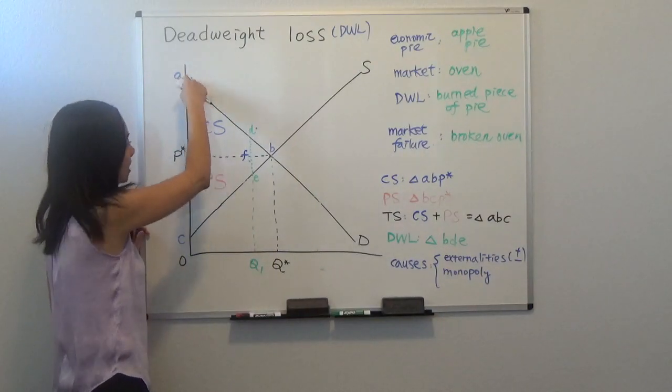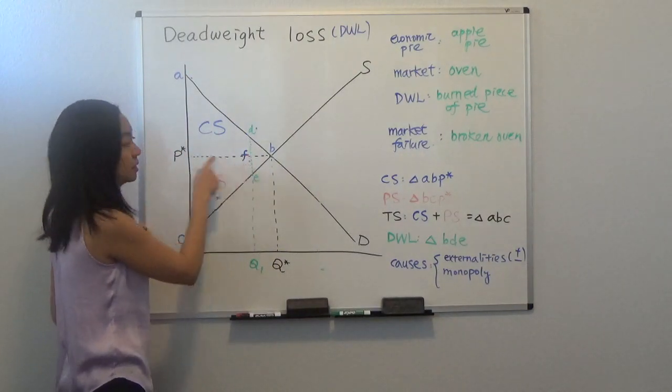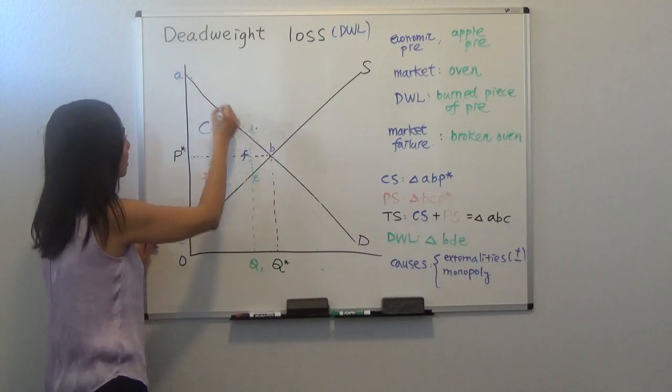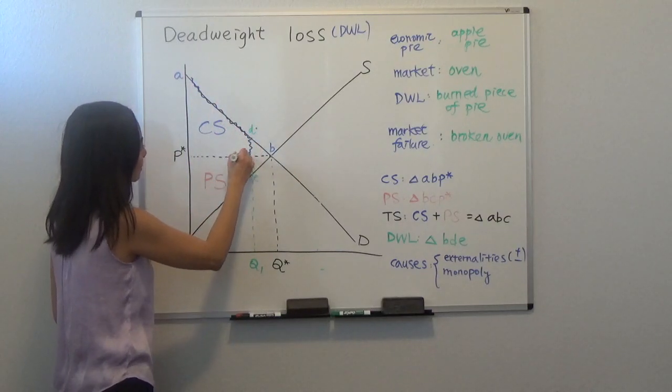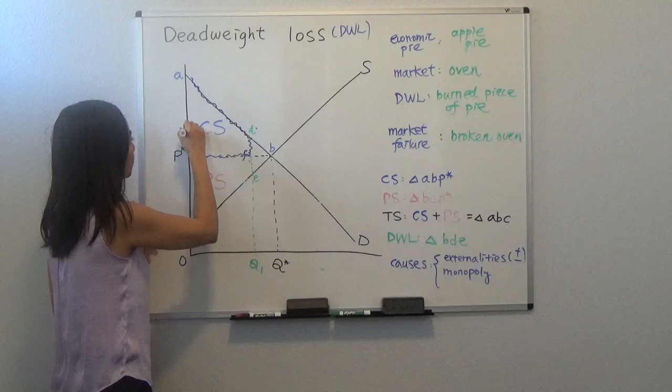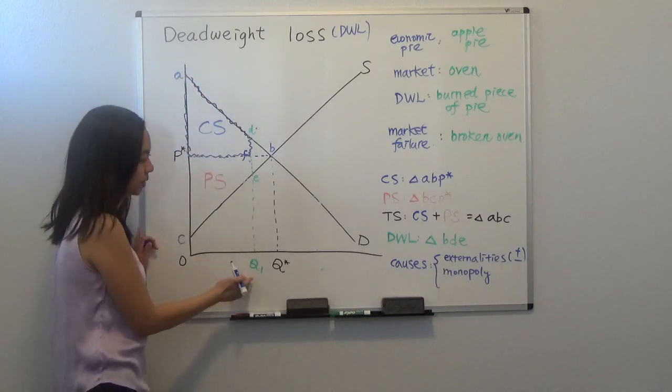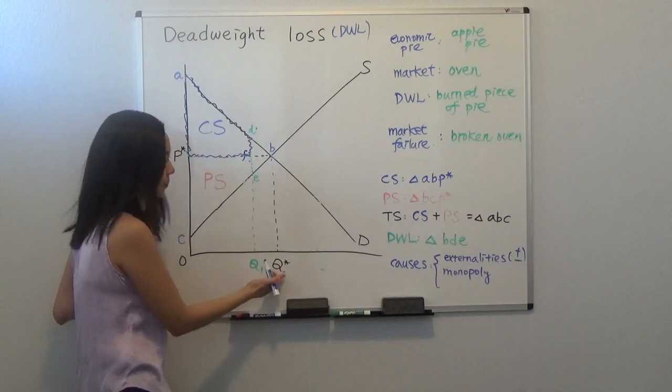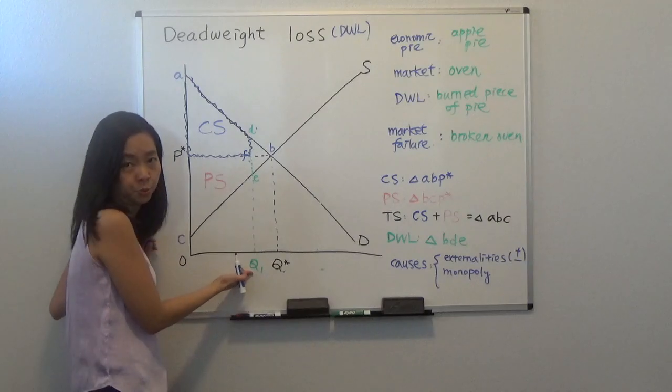It's area A, D, F, P star. So that is a trapezoid. This area, that will be your new consumer surplus, because you are not producing quantity Q star. You're producing Q1 instead, you're producing too little.